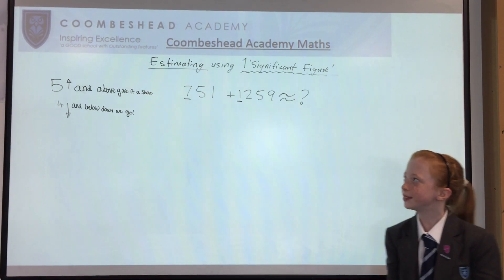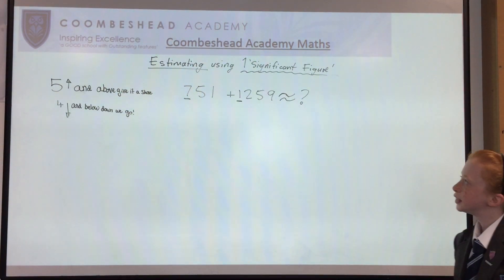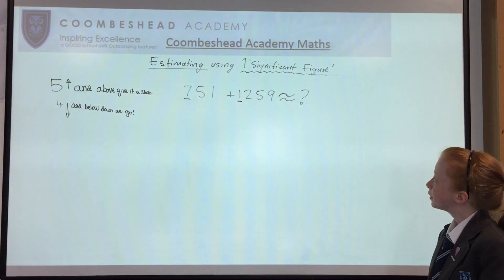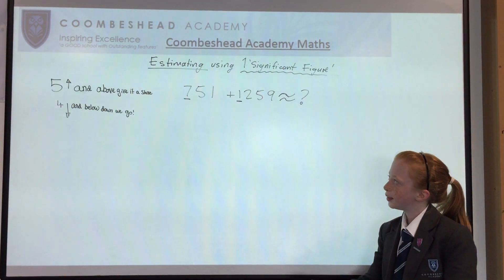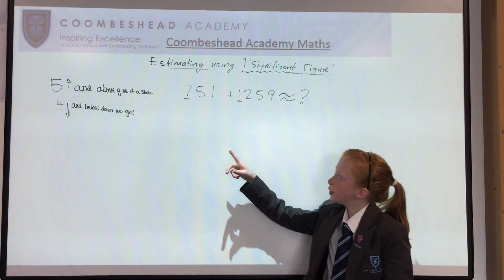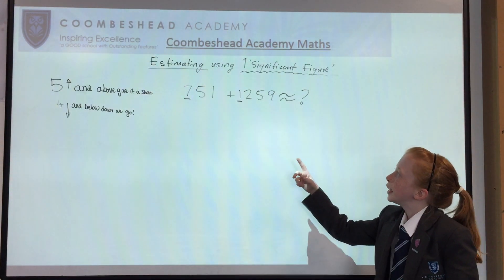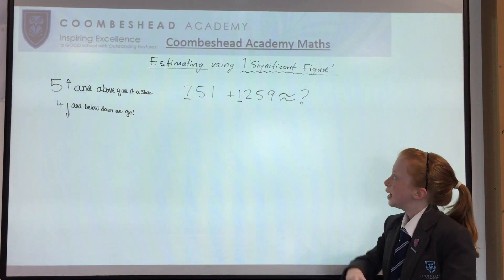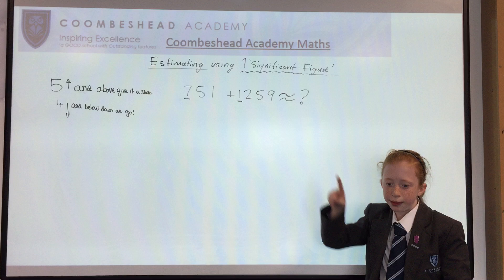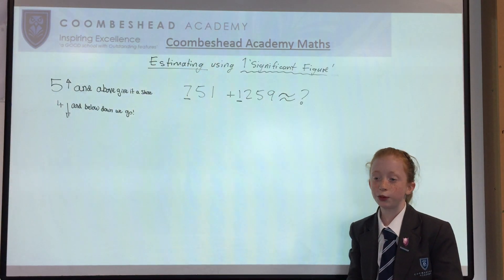Welcome to Coombeshead Maths. Today we're going to be estimating using one significant figure. So we have 751 plus 1259. These wavy lines mean approximately equal to.